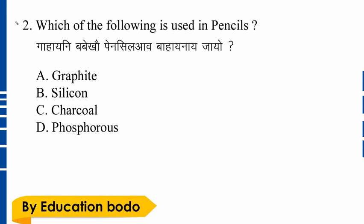Question number two: Which of the following is used in a pencil? Option C is the right answer — Graphite. Pencils use graphite.